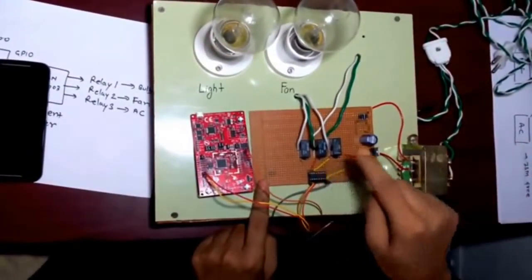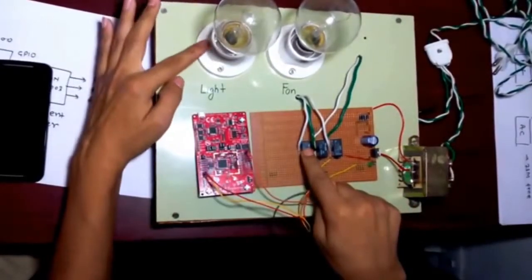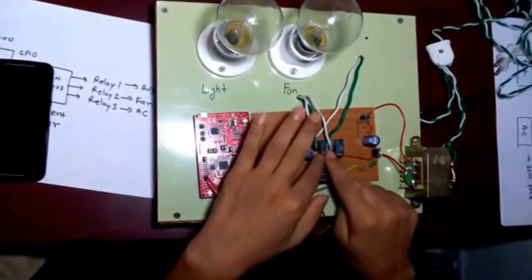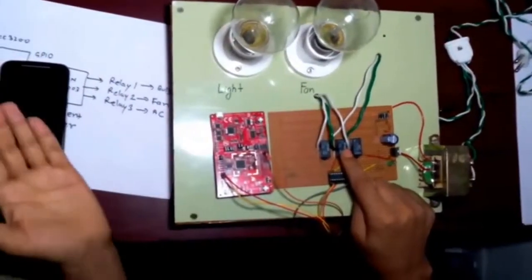This ULN is driving relay 1, relay 2, and relay 3. This relay 1 is connected to this light one, and relay 2 is connected to light 2, which corresponds to the fan in my Android application.